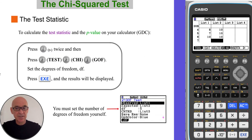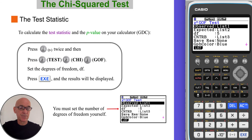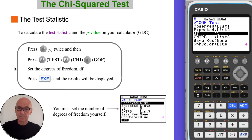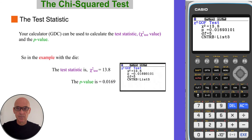To calculate the test statistic and the p-value, press F6 twice to get back to the main menu, then press F3 for test, F3 again for chi-squared test, and F1 for a goodness of fit test. For the goodness of fit test we must enter the degrees of freedom ourselves — in my example, degrees of freedom were 5. Scroll down, set the degrees of freedom to 5, then press execute. The test statistic chi-squared value is 13.8 and the p-value is 0.0169.